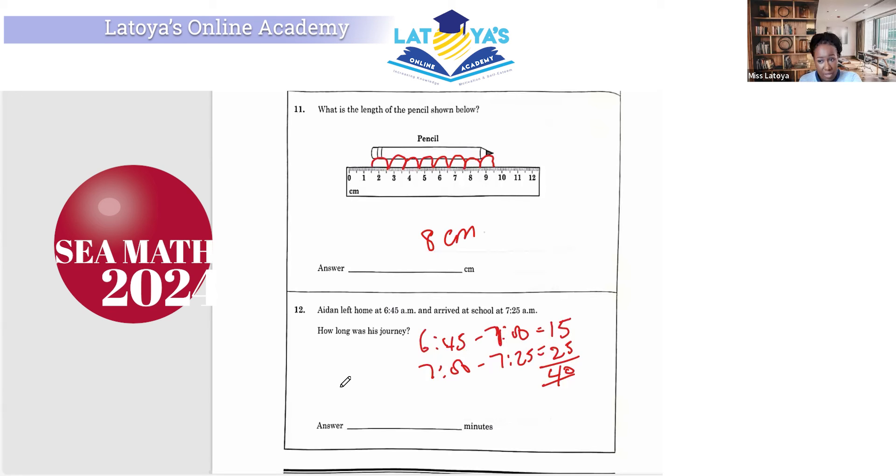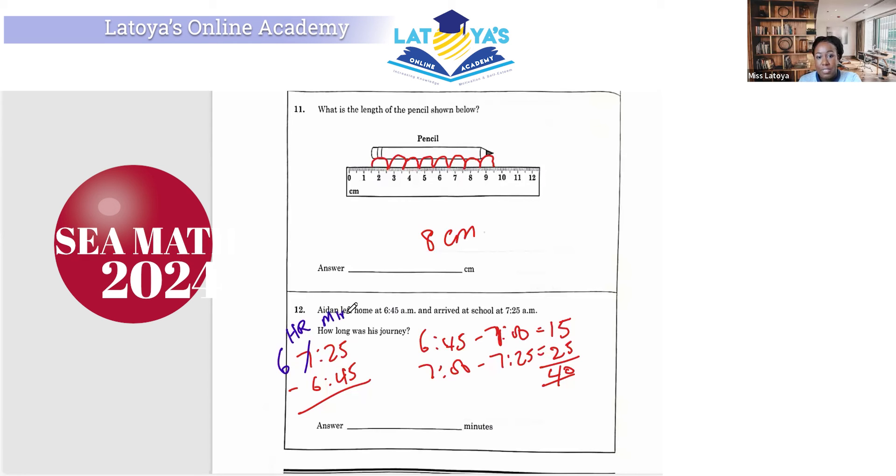Another approach that you could have taken is to subtract 7:25 take away 6:45. And before you subtract time, you need to ask yourself, can 25 minutes subtract 45 minutes? No, it can't. So you're going to take an hour from here. You're going to remain with 6. The hour that you're taking on this side, this side is hours. This side is minutes. So the hour that you're taking here is 60 minutes. So you're going to add 60 to 25, and you're going to get 85 minutes. So we have 85 take away 45 is 40. And 6 take away 6 is 0. We are still getting 40 minutes. So any one of these approaches that you take, you will still get the same answer.